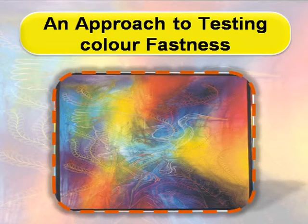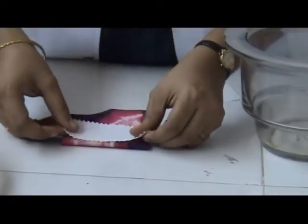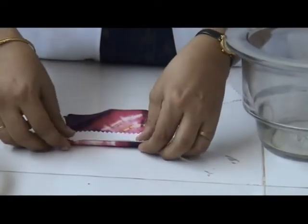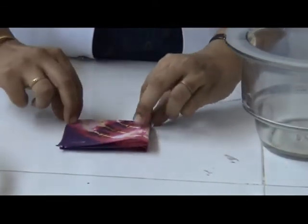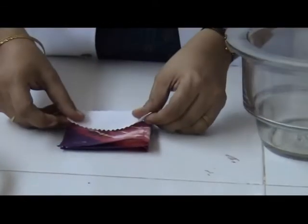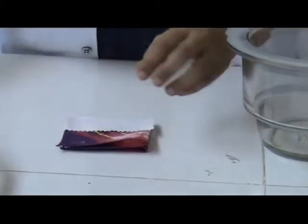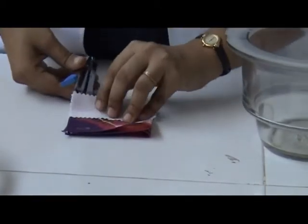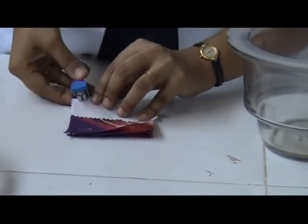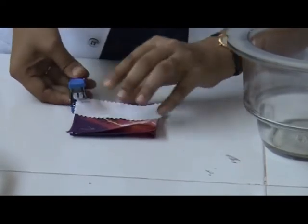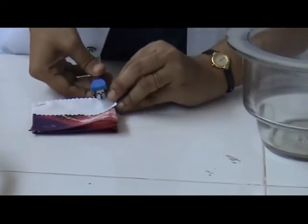An approach to testing color fastness: take a piece of colored fabric and cover half of it on both sides with a white fabric, leaving the other half free. Now wash this fabric and measure it.